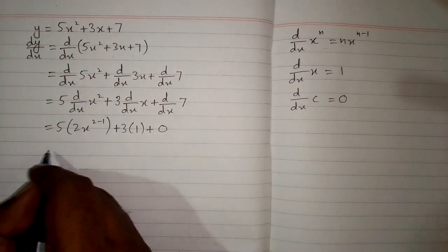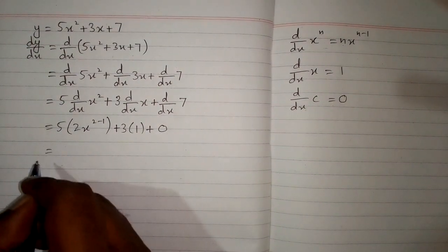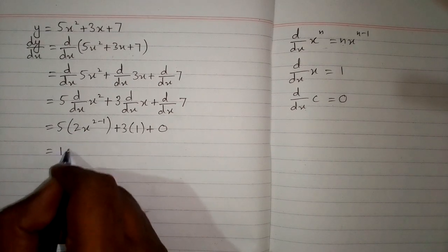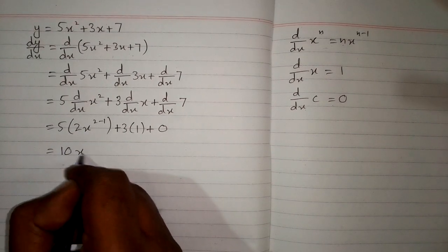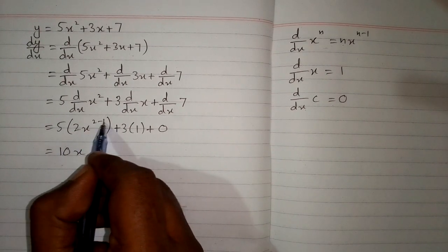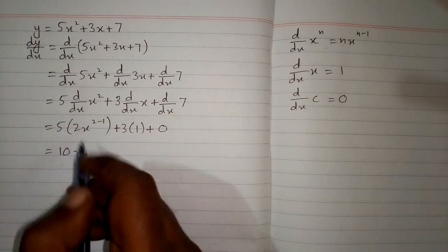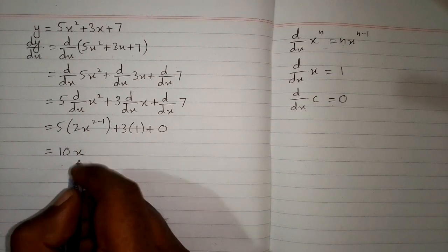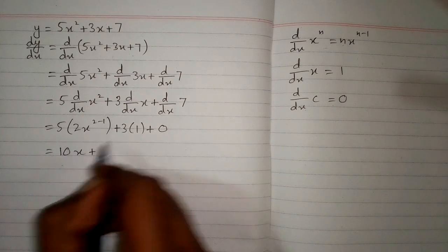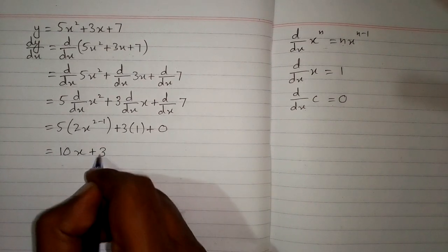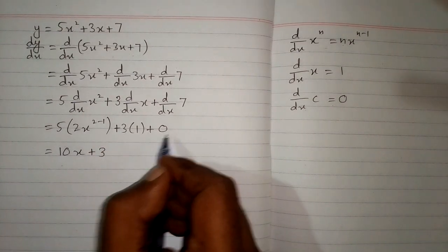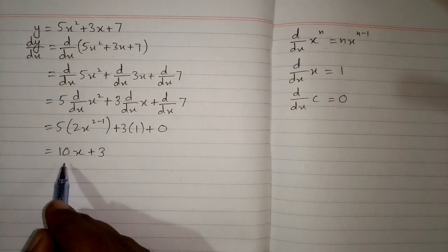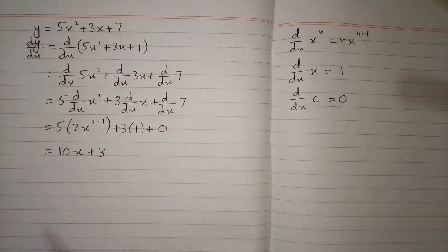Now, 5 times 2 is 10, and x to the power 2 minus 1 is x to the power 1, which we write simply as x. So we have 10x, plus 3 times 1 is 3, plus 0. Therefore, the derivative of the given function is 10x plus 3.